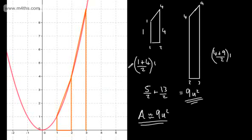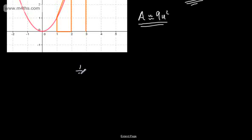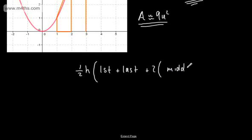Let's now look at a formal definition of the trapezium rule. When you open an exam book, you will be given the trapezium rule: the integral from a to b of y dx is approximately equal to one-half times h, where h equals (b minus a) over n, multiplied by the sum of the ordinates in a specific way. What I want to do is make this easy to work with.